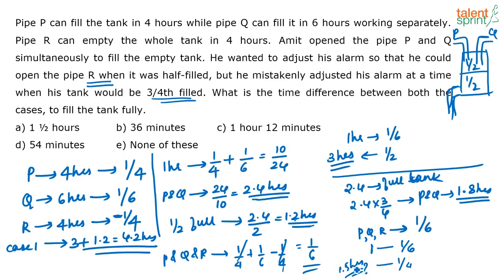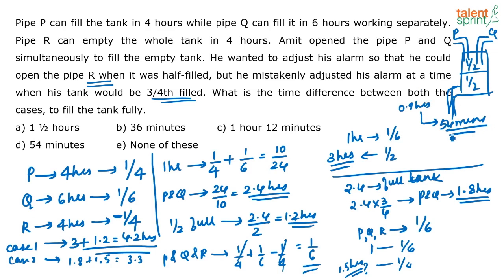For the first 1.8 hours P and Q are working, then for the next 1.5 hours P, Q and R are working. So 1.8 plus 1.5 equals 3.3 hours total in case 2. The difference is 4.2 minus 3.3, which is 0.9 hours. That is 9/10 hours, and multiplying by 60 gives 54 minutes. The correct answer is option D.